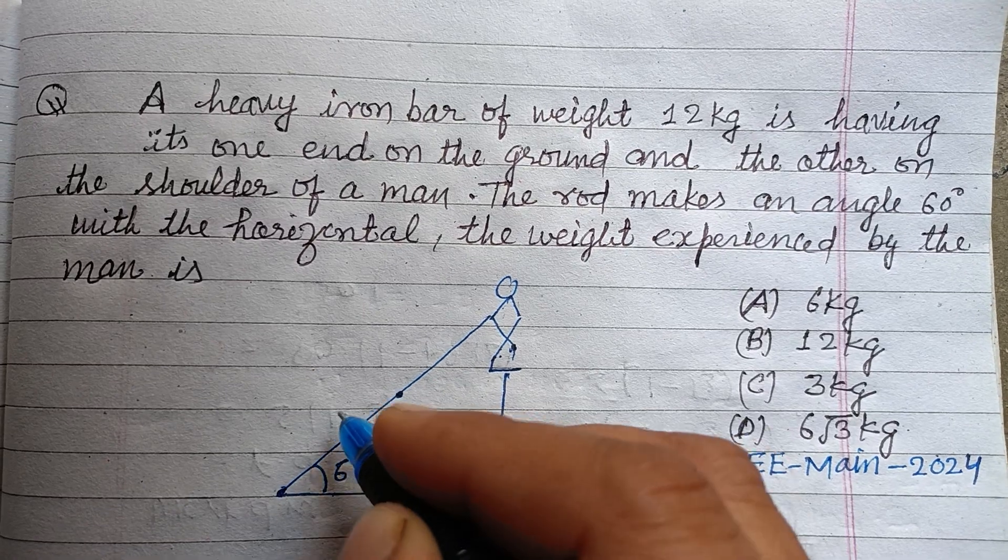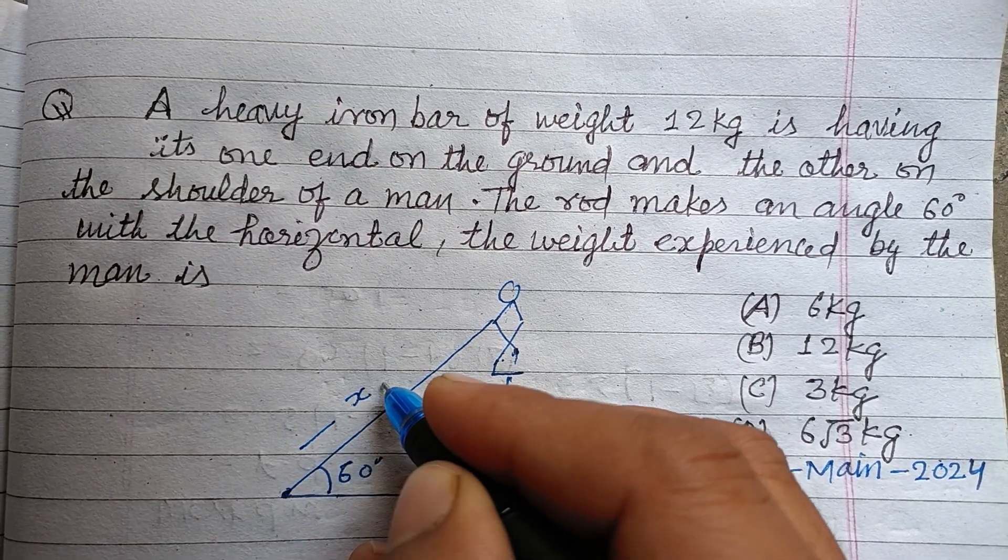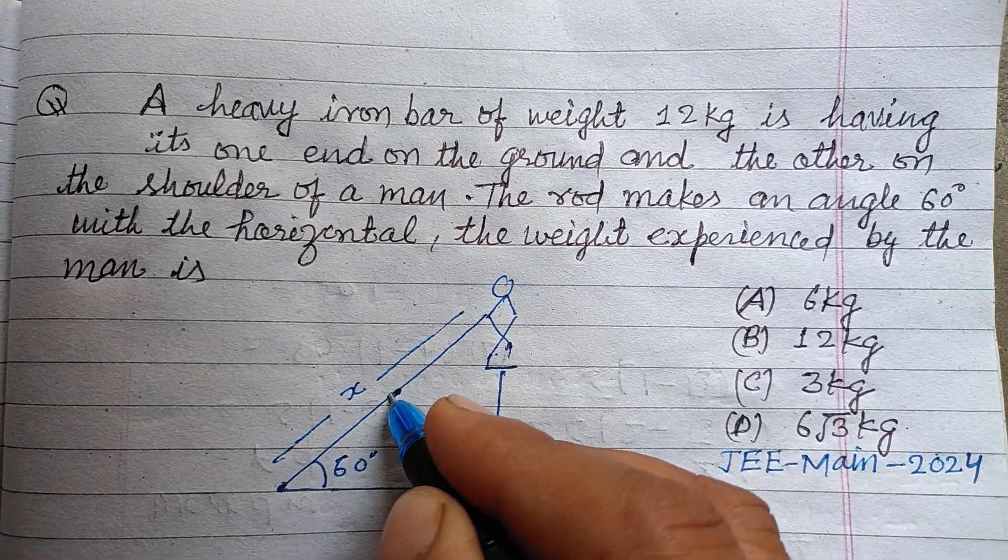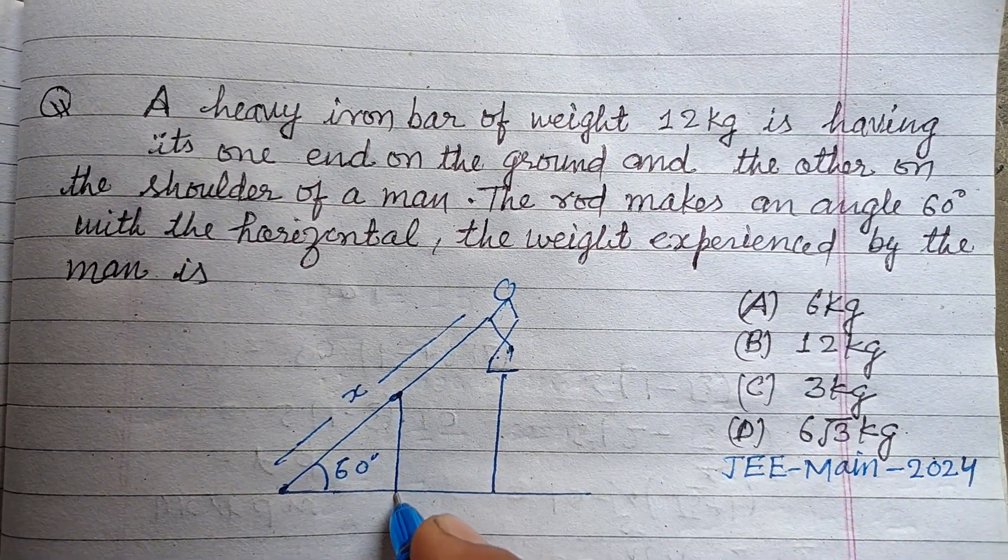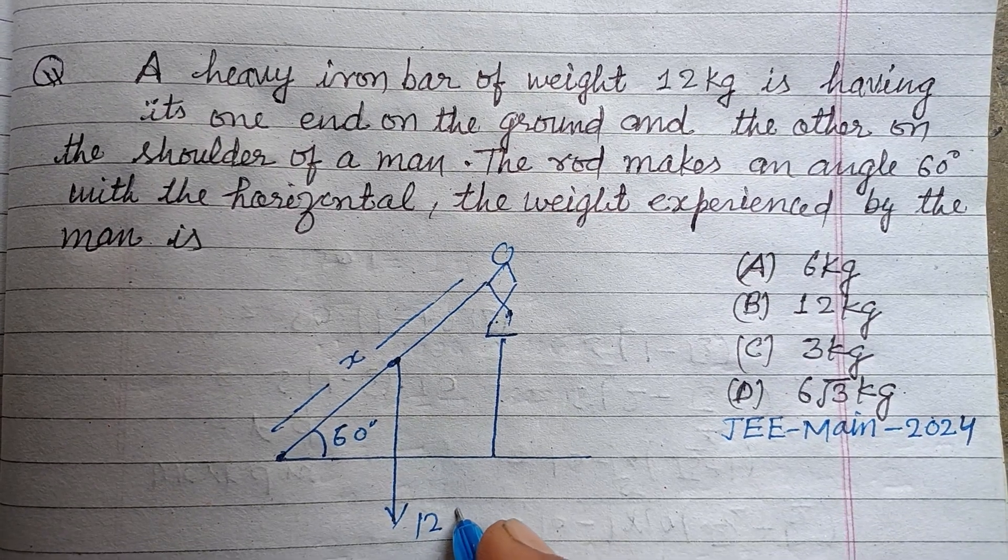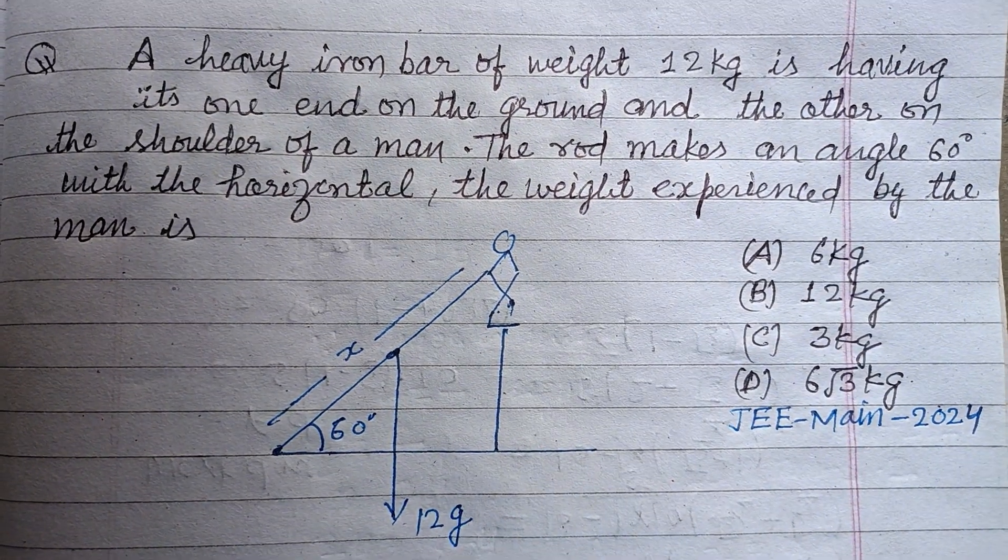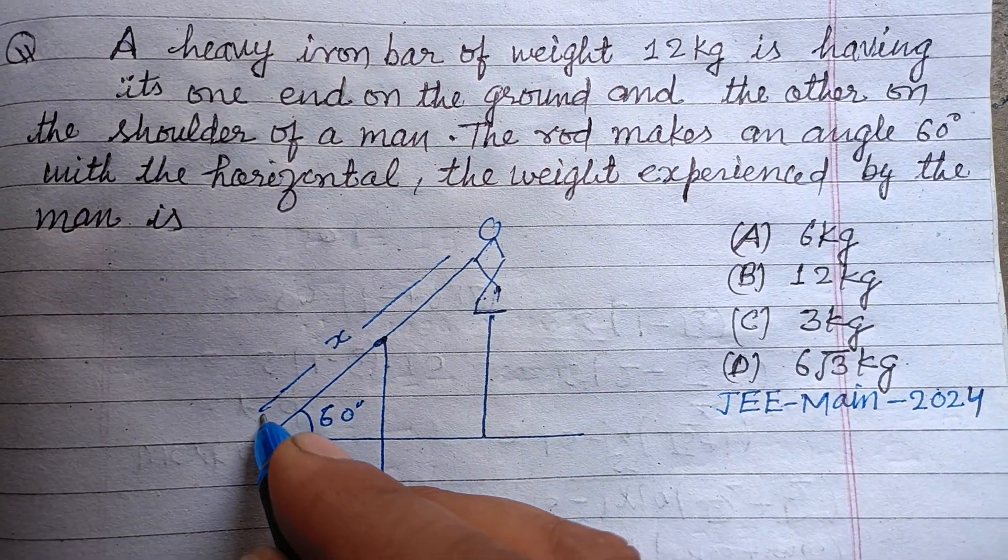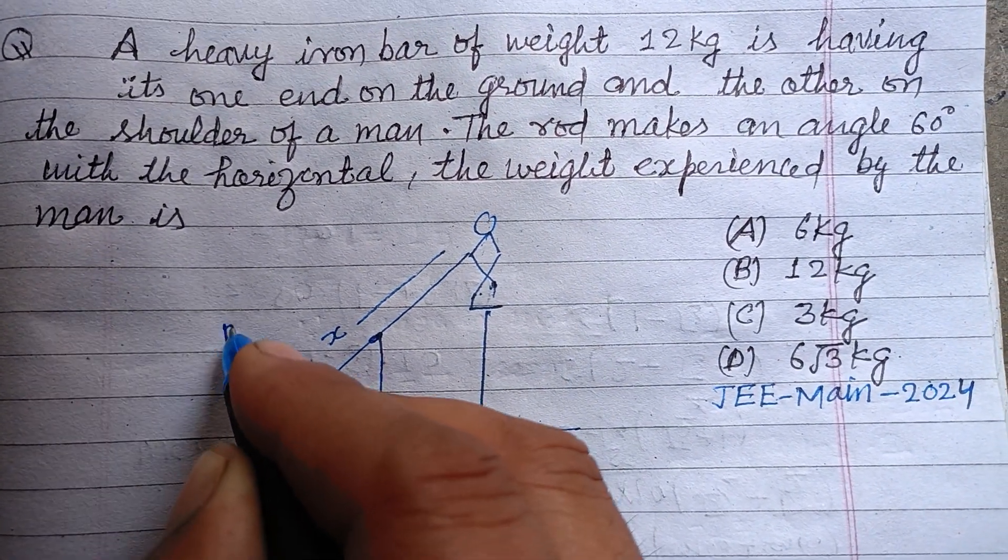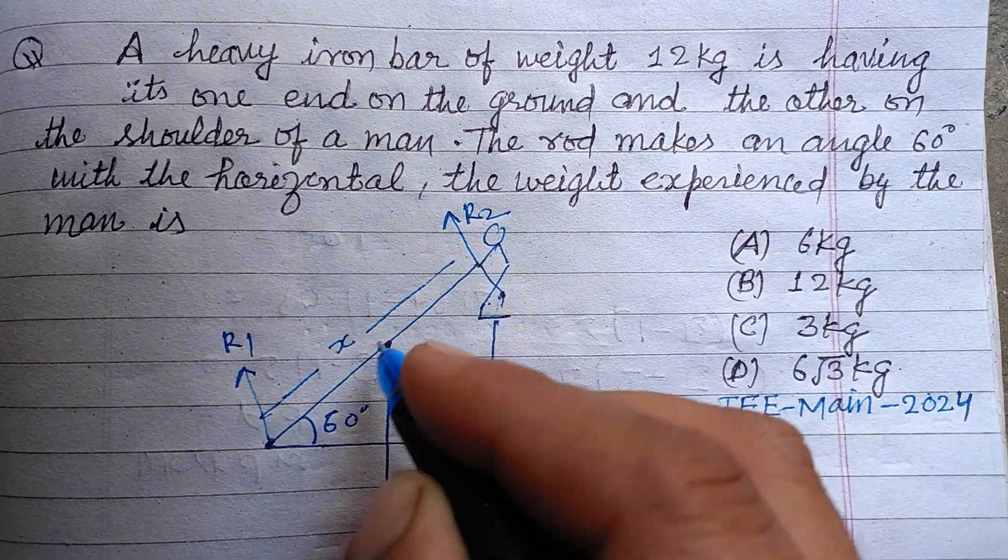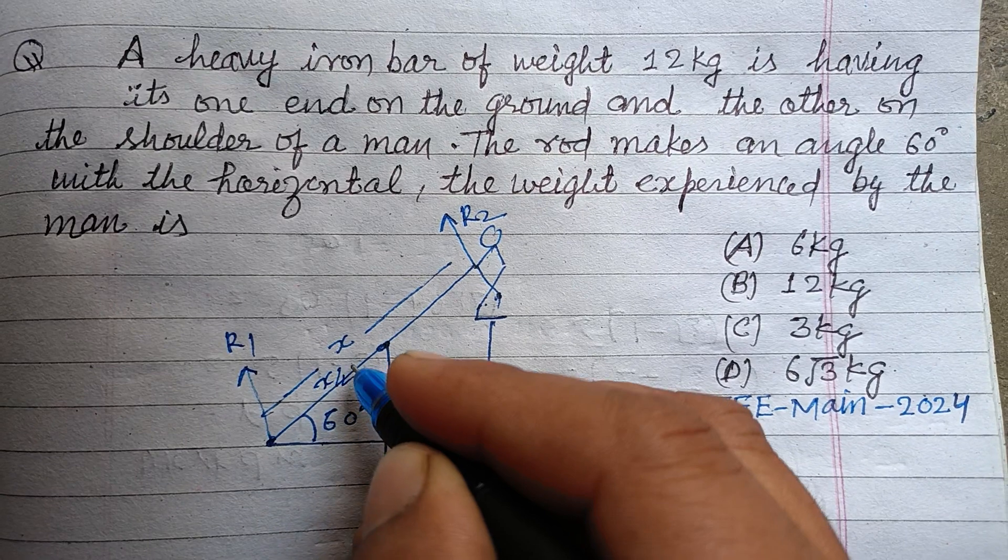And the weight of this rod, if its length is X, then the weight is acting at the midpoint of the rod. It is 12 kg or 12g. Now the reaction of this ground is R1 and the reaction of this shoulder is R2.